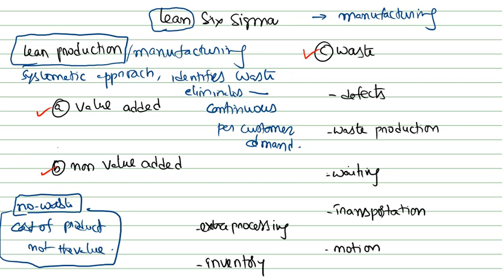Waste refers to process steps that produce no value for the customer but consume resources. Think of it like a used cool drink bottle at home — the item is there, occupying space, but is not in use — that is considered waste.